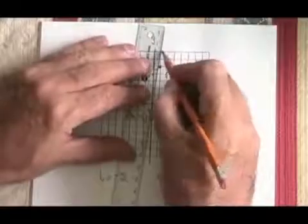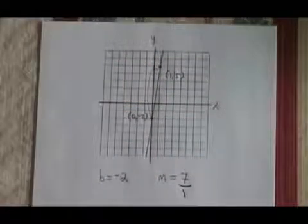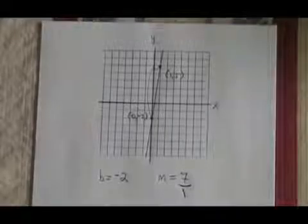And all that's left to do is draw my line with the ruler. And I'm finished. I have graphed the line. This is how you use the trick of rise over run.